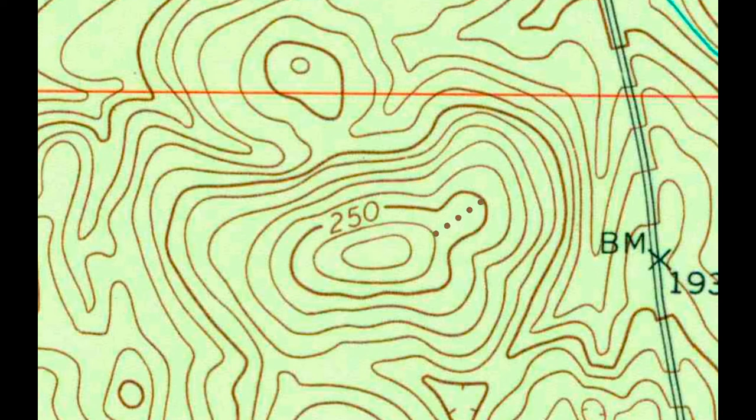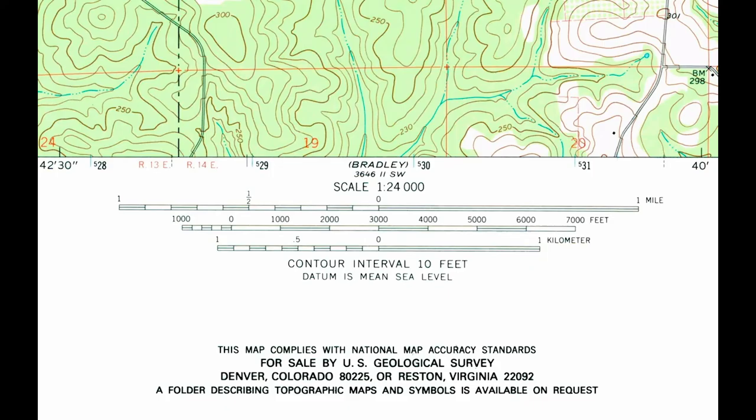The distance between one contour line and the next is known as the contour interval. The contour interval of your map should be printed at the bottom margin of your USGS topo map.